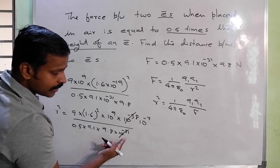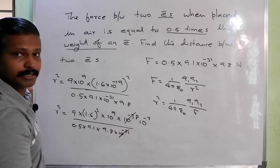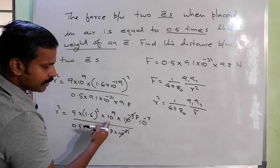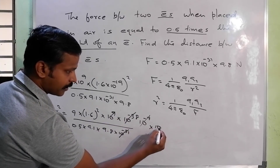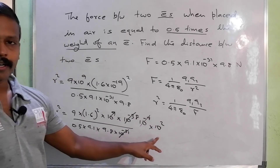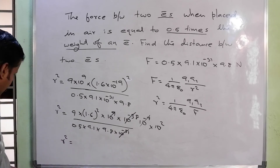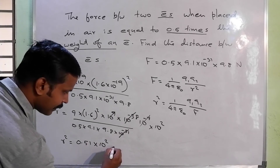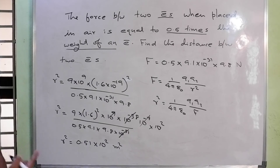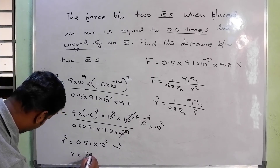Here, minus 31 and minus 38 cancel to give 10 raised to minus 7, and with 10 raised to 9, we get 10 raised to 2. So R squared equals approximately 10 raised to 2 — this is in meters squared. Taking the square root, R is equal to 7.2 meters. This is the distance.